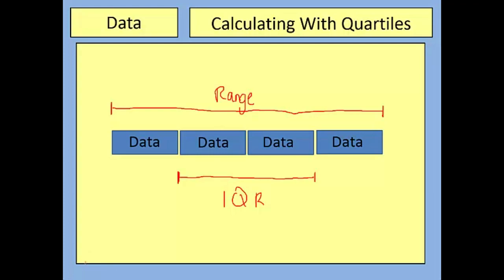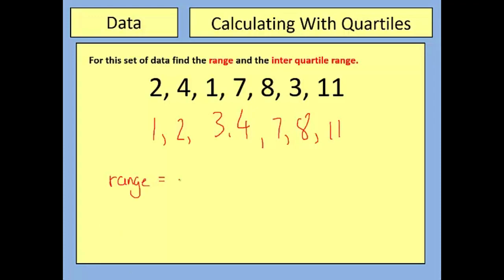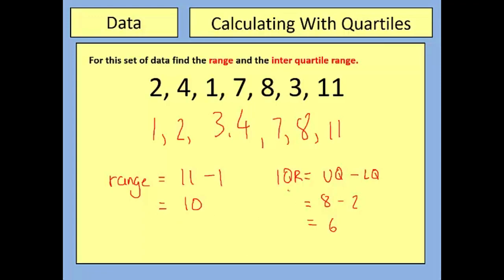Let's look at how you calculate these. Here's a set of numbers — calculate the range and interquartile range. Putting them in order: 1, 2, 3, 4, 7, 8, 11. The range is the largest minus the smallest: 11 − 1 = 10. The interquartile range is the upper quartile minus the lower quartile. The upper quartile is 8 and the lower quartile is 2, so 8 − 2 = 6. Our range is 10 and our interquartile range is 6.